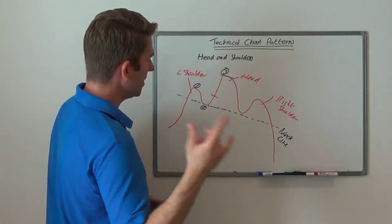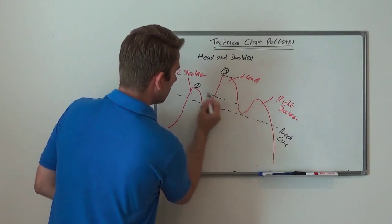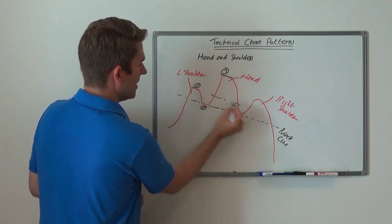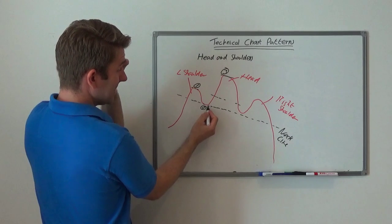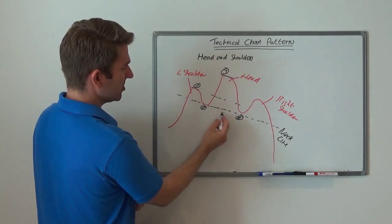However now we come back and not only do we go through this kind of prior high level here, if that lines up, but we also test this low at number two here. So I'm going to label that as four, so four matches two within kind of a few ticks.